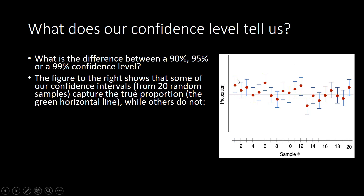For example, you can see that this confidence interval here is not touching the green line, which represents the true population proportion. Most of these confidence intervals cross the population proportion at some point, but this one and this one do not. We also see that this confidence interval does not touch or encapsulate the true population proportion — the green line.